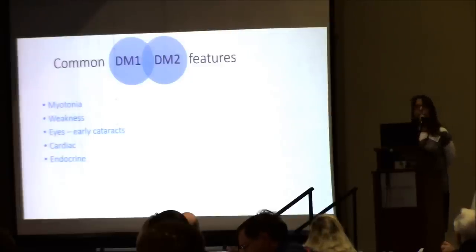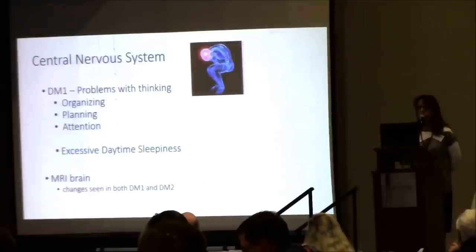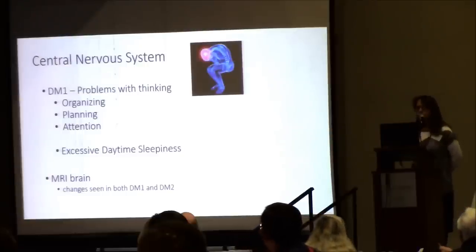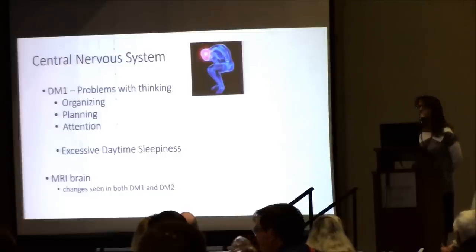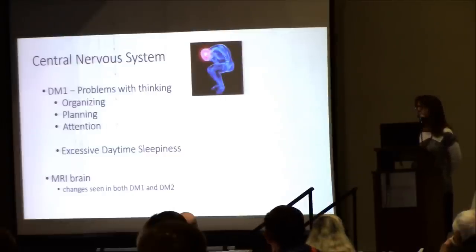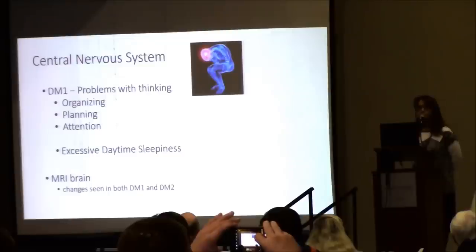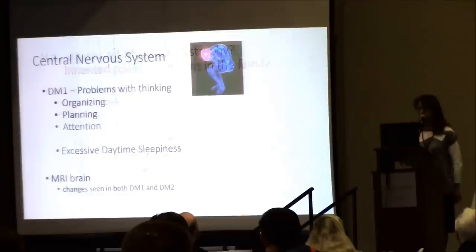DM1 and DM2 have many features in common — myotonia, weakness, early cataracts, cardiac involvement, and endocrine involvement — but one thing that sets them apart is central nervous system involvement. In DM1, there tends to be a problem with thinking in some people — not a dementia, but more of what we call executive functioning problems: organizing, planning, and attention. This is not seen in DM2. However, MRI of the brain in both populations shows changes in the deep white matter, to a greater degree in type 1.